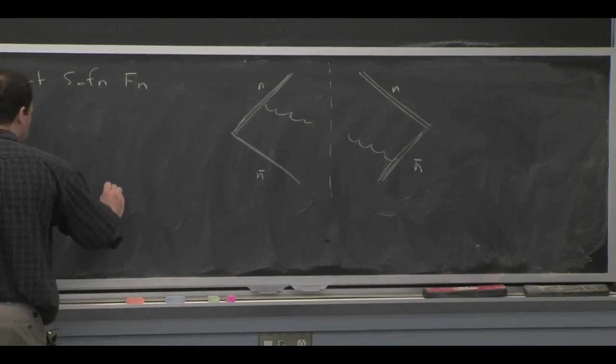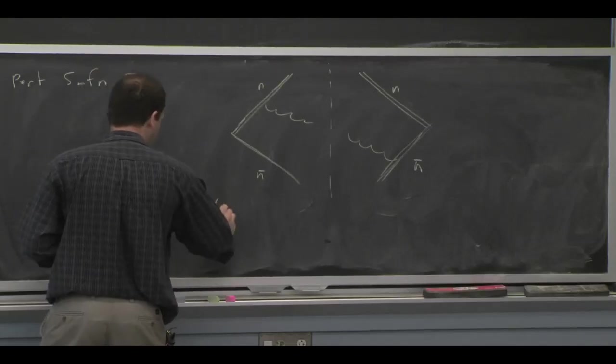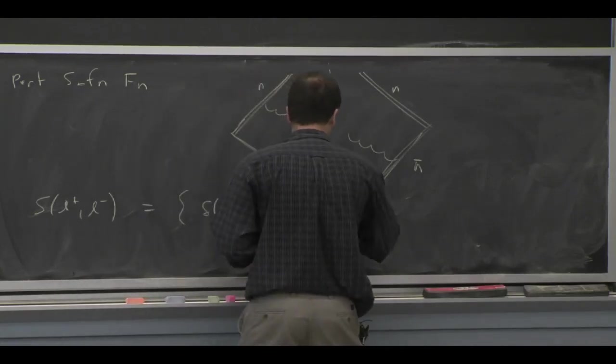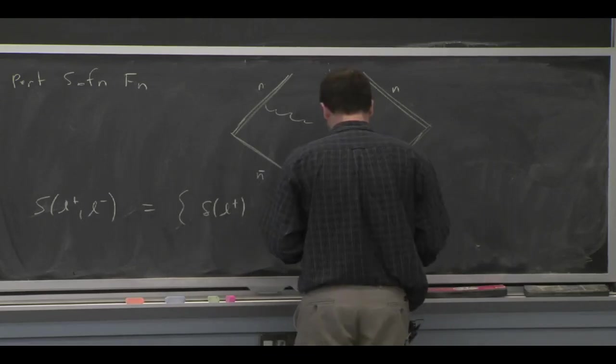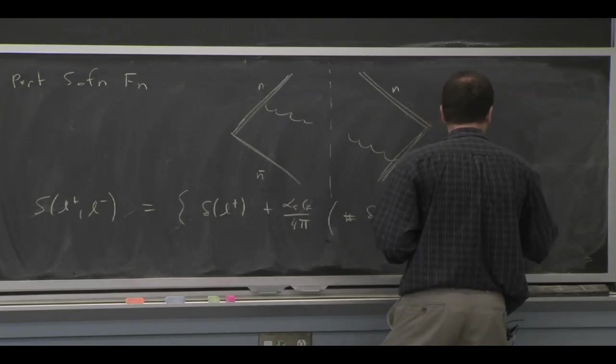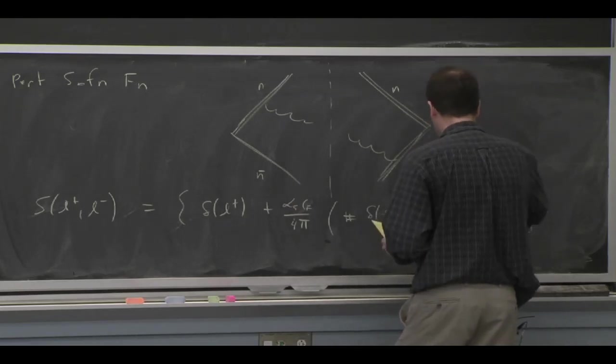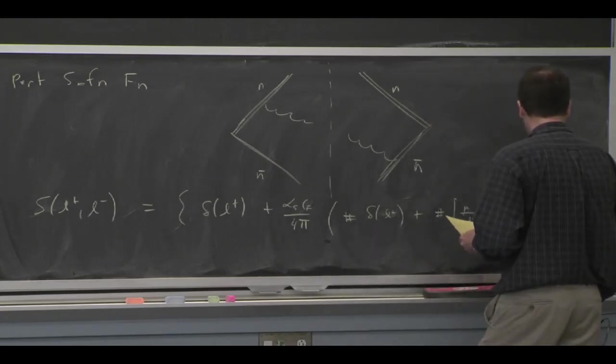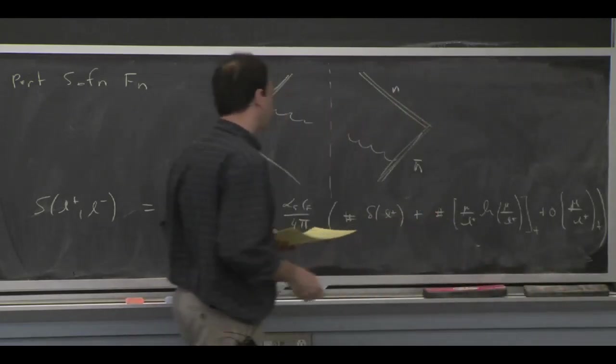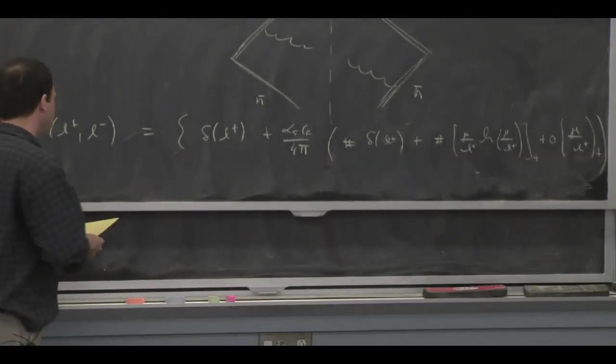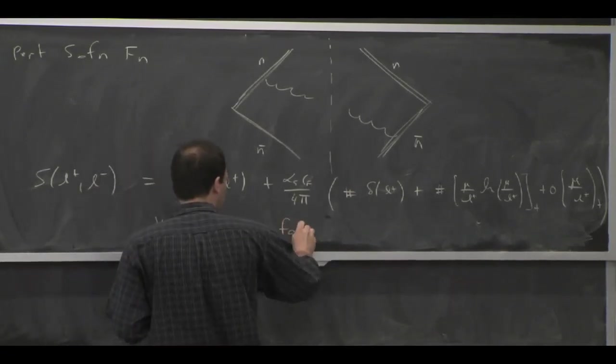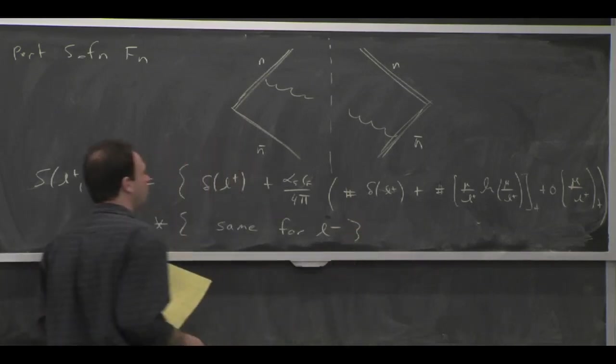And if we look at the soft function, it kind of has a similar structure to the jet function. But now, so again, it's got a delta function and then plus functions. And it turns out there's no single plus function. But there is a plus function with a logarithm in this case. And then same for L minus, same structure. Just a product, if you like.